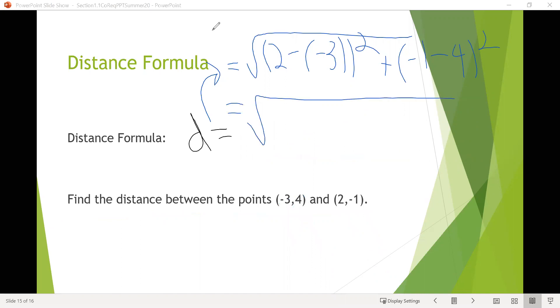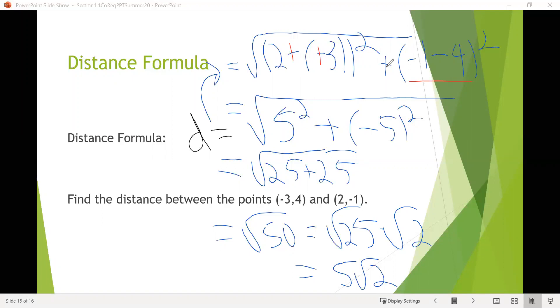Then we can start to simplify this. We'll get square root of, in the first set of parentheses we have two minus a negative three, that'll make a plus. Two plus three gives us five squared plus, here we have negative one minus four, which would be negative five squared. We know that five squared and negative five squared are both 25, so the square root of 25 plus 25 should be the square root of 50, which we can simplify further. This becomes square root of 25 times the square root of two, so just become five root two as our distance. We also have to make sure we put units on this because it's distance. We weren't given any units here, so we'll just use the label units to represent that.